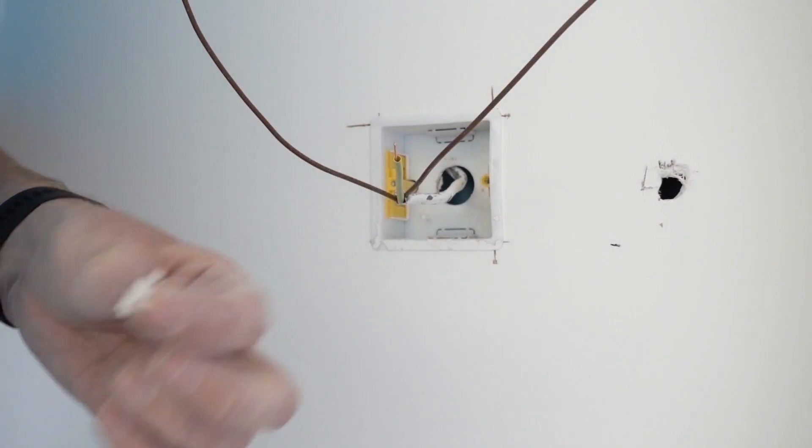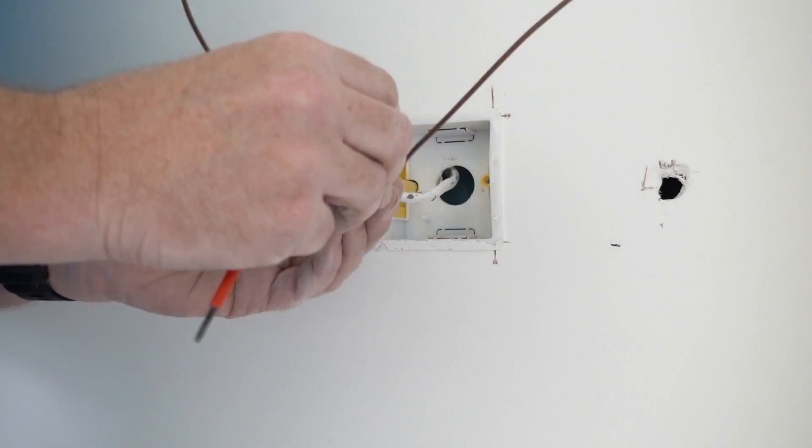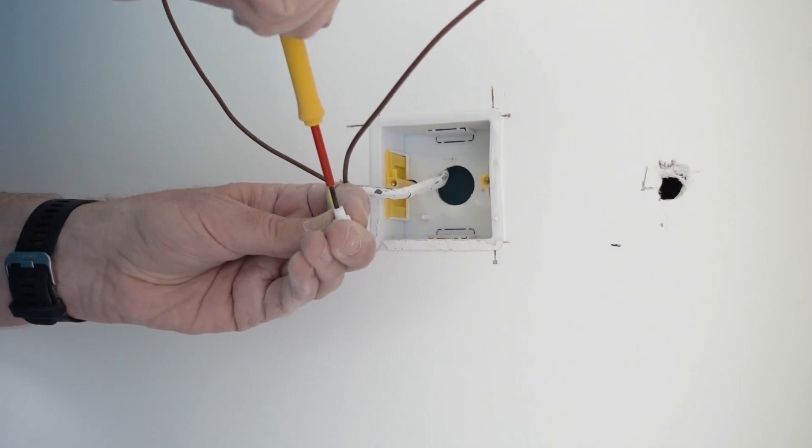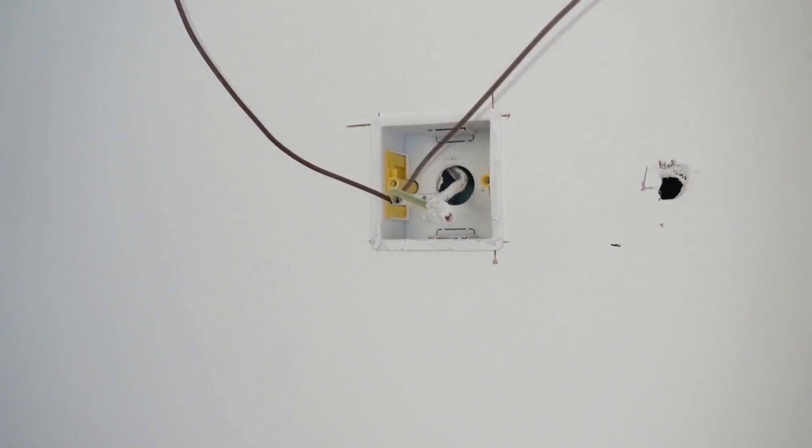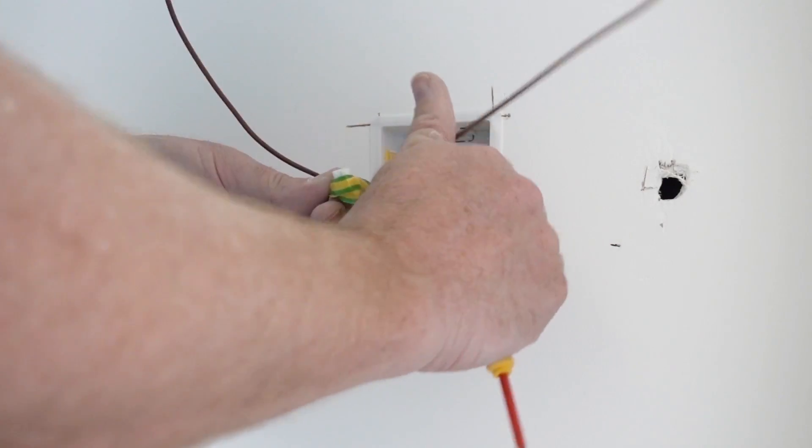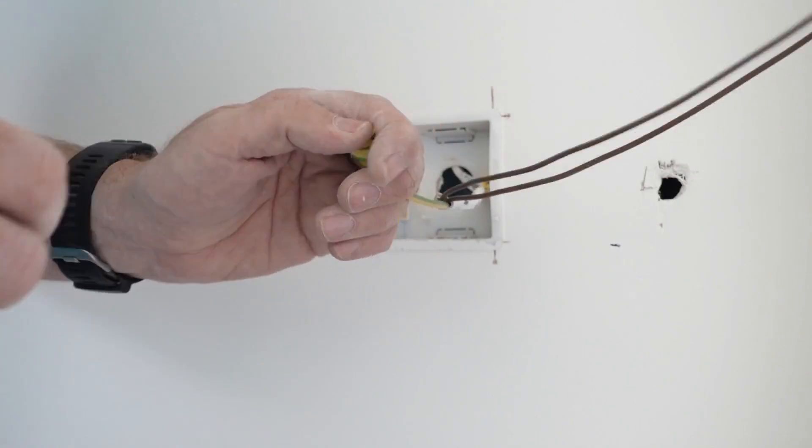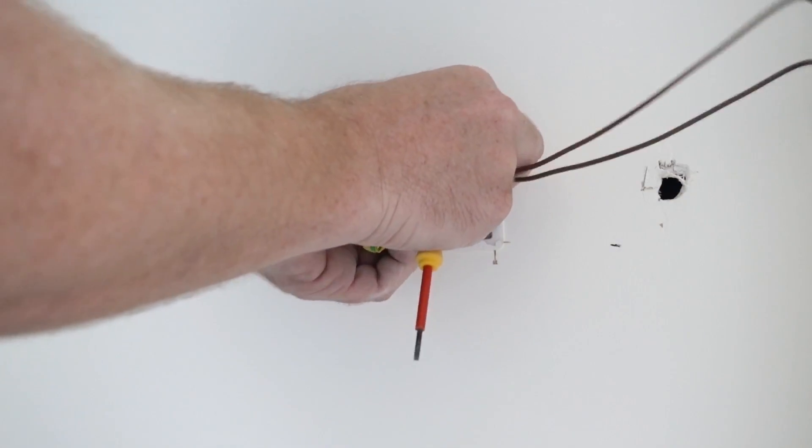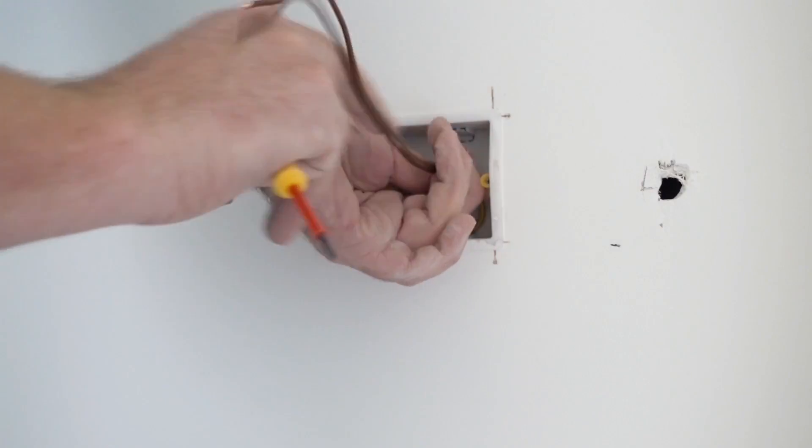We just take a connector block and connect that on. It's one of the few times I'm happy to use a connector block in the light switch. So there you go, connector block on and then just a little bit of tape around it. And then that just pushes to the back of the box out of the way.